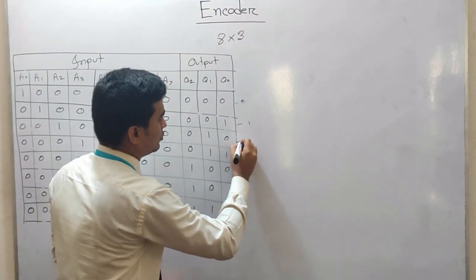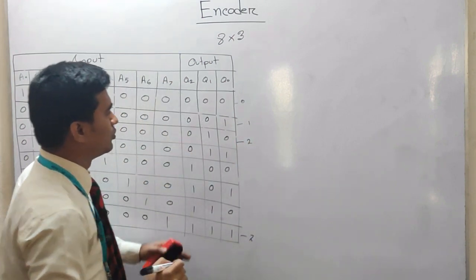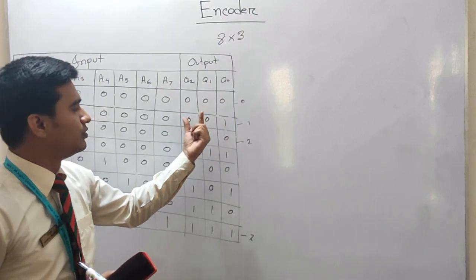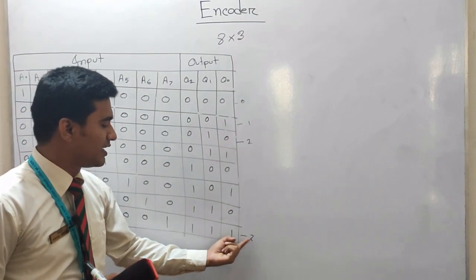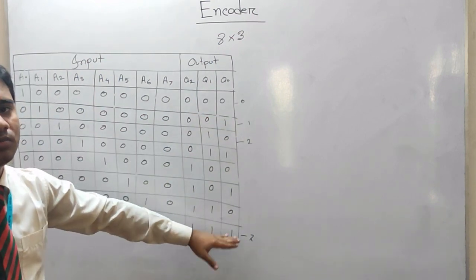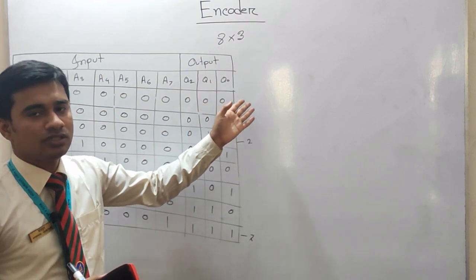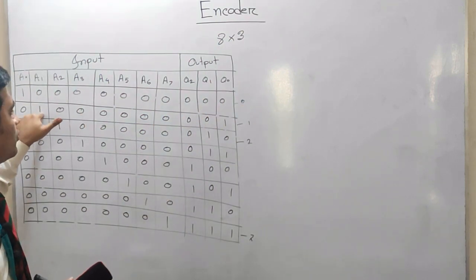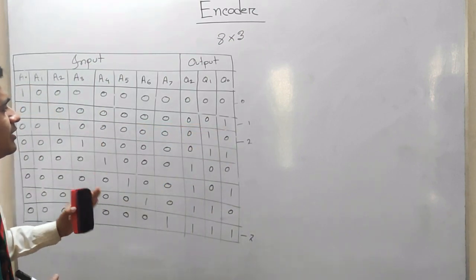Binary 0 means 0, binary 1 means 1, binary 2 means 2, and up to binary 7 means 7. This means output: 0, 0, 0 means 0. 0, 0, 1 means 1. 0, 1, 0 means 2, and so on up to 7. This is the truth table. Once we press input A1, we get output 0, 0, 1, meaning A1 is 1.